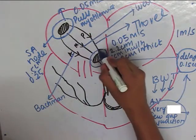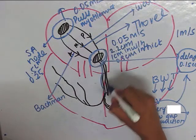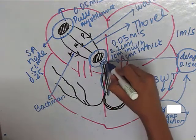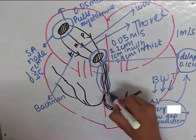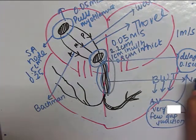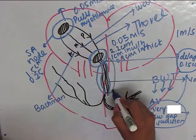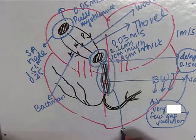Now after the action potentials reaches the AV node, where does it go? It is transmitted in the form of bundle of His. This one is the bundle of His. It is about 1 centimeter in length and the speed of conduction is 1 meter per second.